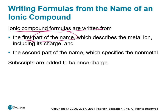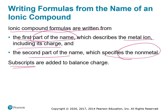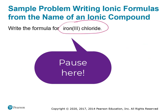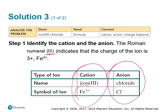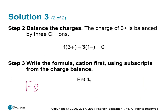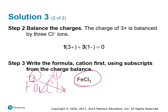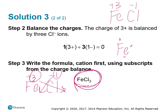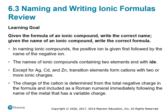Ionic compound formulas are written from the first part of the name, which describes the metal including its charge, the second part which specifies the non-metal, and then the subscripts that balance the charge. For iron(III) chloride: the 3 tells me I have a positive 3 charge for iron, and chloride is chlorine with a negative 1 charge. Taking Fe plus 3 and Cl minus 1 and criss-crossing gives 1 iron and 3 chlorines — FeCl3. If iron has 3 outermost electrons and chlorine has 7, each chlorine can only accept 1 electron, so we need 3 chlorines to give away all three of iron's electrons.